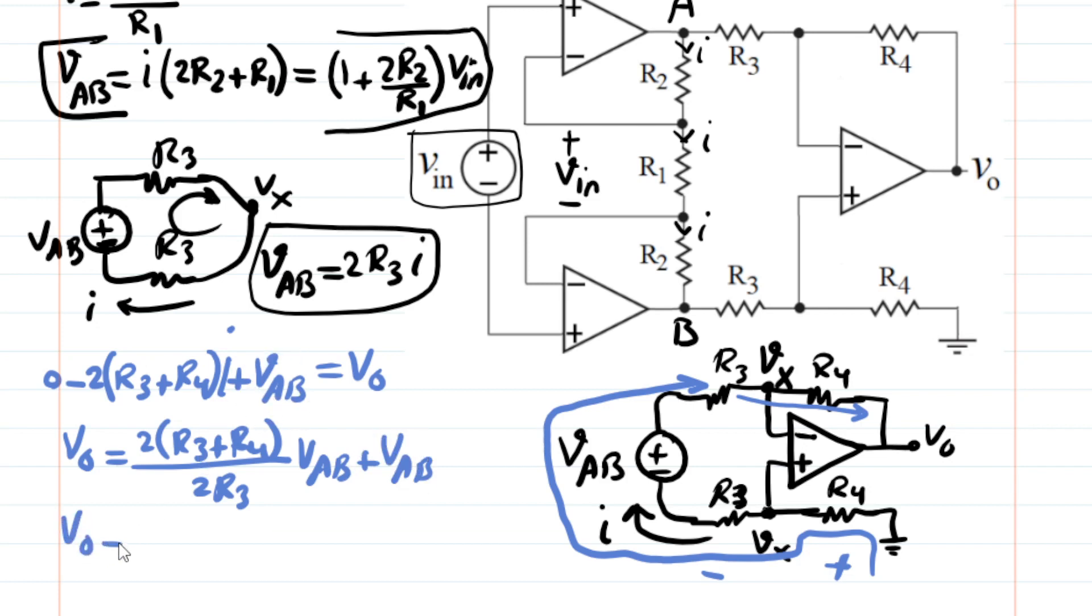And then you have also VAB. That plus VAB is for the last component we have. So therefore, V out is equal to, of course, when you simplify this whole thing, it becomes 1 plus R4 over R3. And there is a negative sign. This negative sign. So it's effectively negative 1 plus, sorry, negative 1 minus R4 over R3 times VAB. And then plus 1 times VAB. So that's what you get.